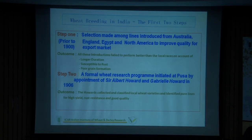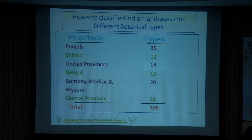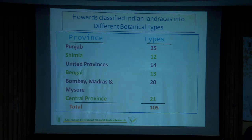Sir Albert Howard and Gabriela Howard, husband and wife, were appointed to streamline the Indian wheat program in 1906. They classified Indian wheats into 105 different types from across different provinces. From every province they collected wheat — bread wheats, durum wheats, even from Mysore and central provinces. This is called Howard's collection, which is very important as it represents our own basic wheats, the Indian land races.